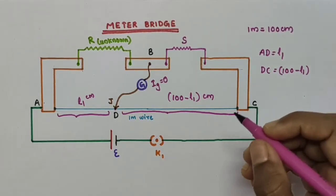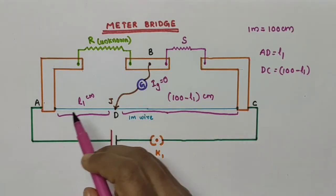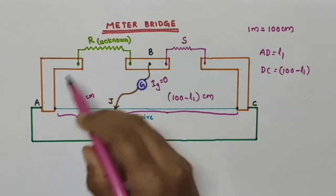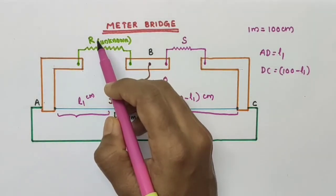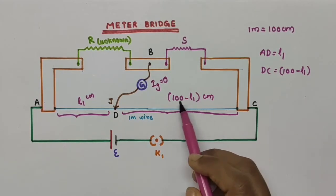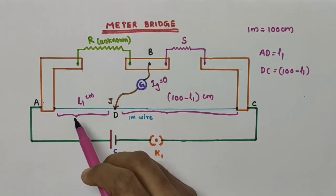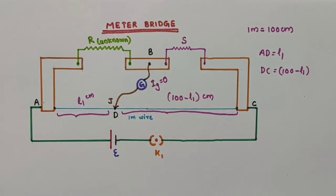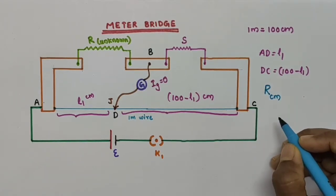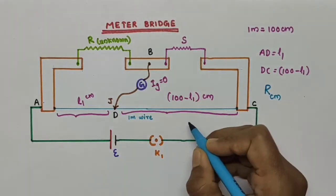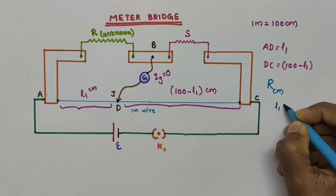The four arms AB, BC, CD and DA of the bridge have resistances R, S, then RCM into 100 minus L1, and RCM into L1 respectively. Let R_CM be the resistance of the wire per unit centimeter. Then the resistance of the wire of length L1 centimeter will be RCM into L1.